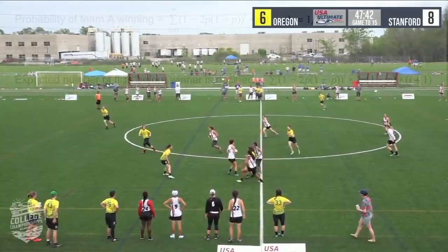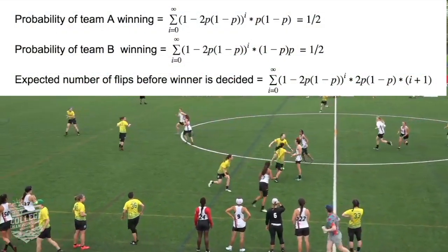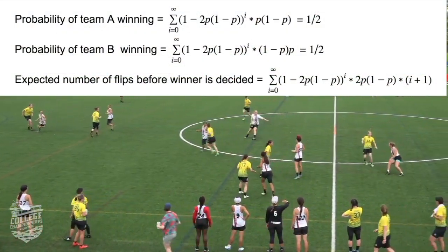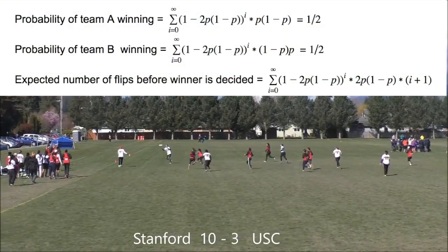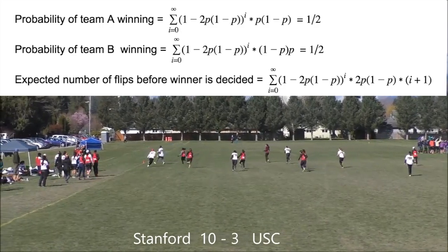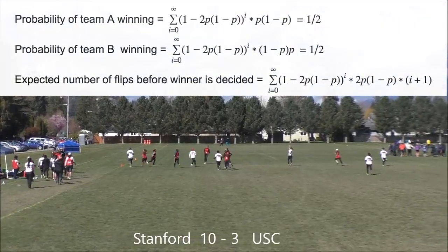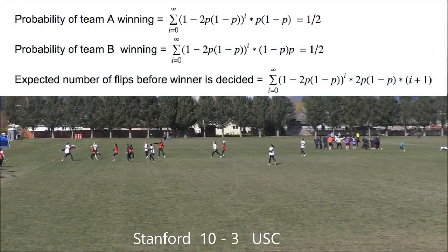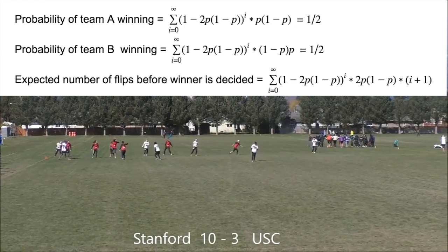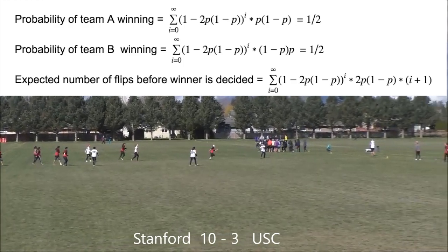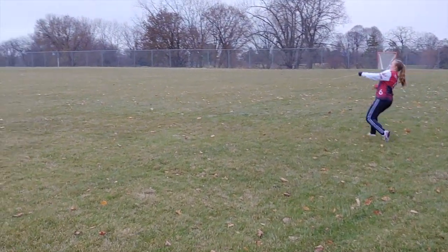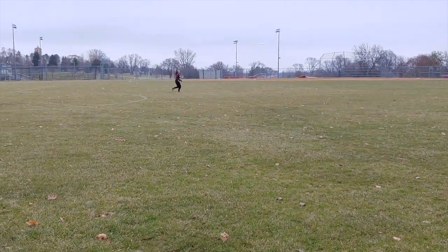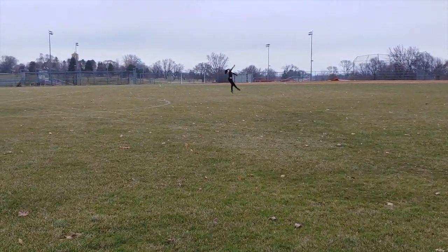Mathematically, we can model the probabilities of winning as an infinite geometric sum using the following equations. We see that in both cases, as n approaches infinity, the limit does exist, and the probability approaches one half — which is 50%. That means both teams have the same chance of winning, and we can expect roughly two flips on average to determine the winner.